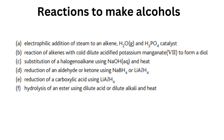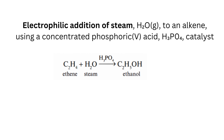Chemical reactions to make alcohols. These are the different reactions: electrophilic addition of steam to an alkene, reaction of alkenes with cold dilute potassium permanganate, substitution of a halogenoalkane, reduction of an aldehyde or ketone, reduction of a carboxylic acid, and hydrolysis of an ester. Electrophilic addition of steam to an alkene uses a concentrated phosphoric acid H3PO4 catalyst. Ethene plus steam in the presence of H3PO4 gives C2H5OH, which is ethanol.